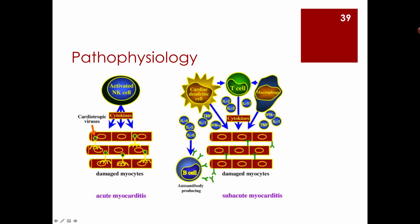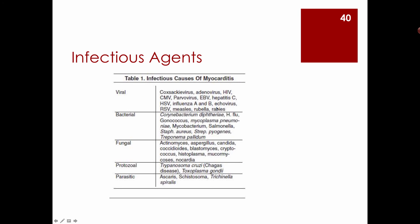The etiology is essentially bad luck — there is no way to predict who will develop myocarditis from a common viral infection. In acute myocarditis, activated natural killer cells release cytokines that attack the heart muscle. In subacute myocarditis, a more complex cascade involves cardiac dendritic cells, T-cells producing interleukin, and macrophages releasing tumor necrosis factor — all causing myocyte damage.